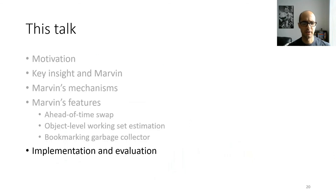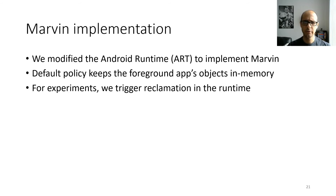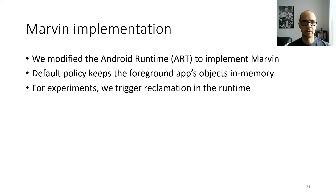For our implementation, we modified the Android Runtime (ART) to implement the Marvin Runtime. Our Marvin Runtime has a default policy where it always keeps the foreground app's objects in memory, to prevent any swapping activity from occurring on the user interface thread. For our experiments, we triggered reclamation directly in the runtime, so we didn't need to make any kernel modifications.